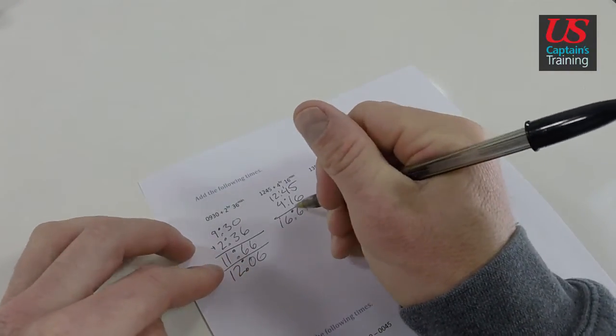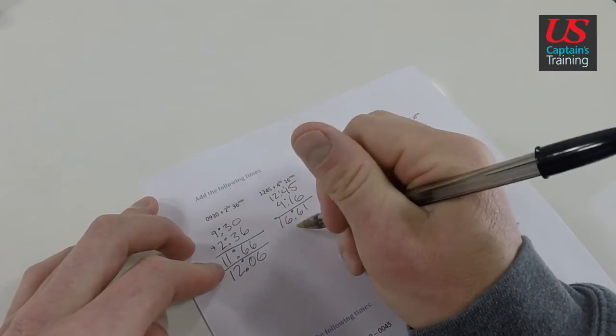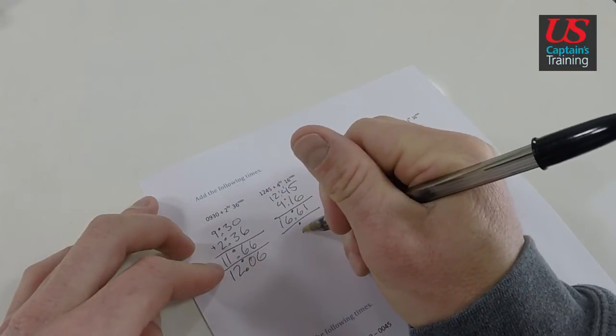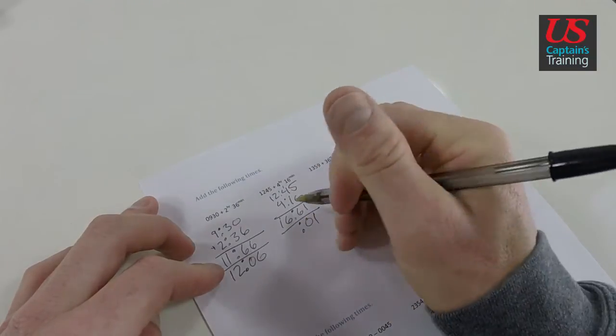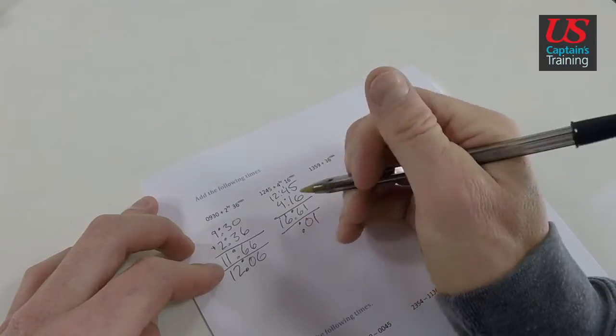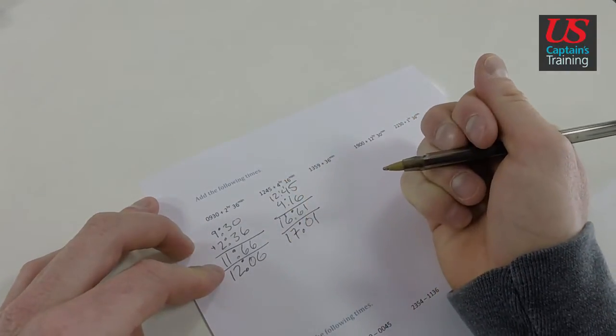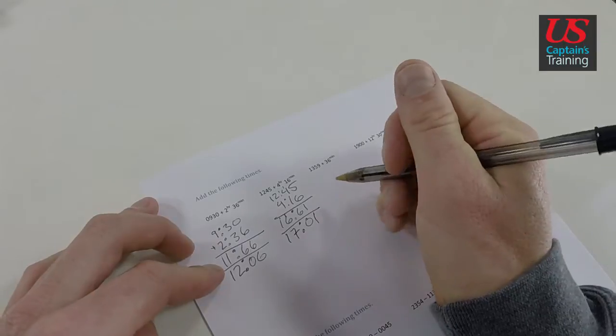Again, look at what we ran into. 61, that's an hour and 1 minute. So we're just going to say we're going to take 60. Now we've got 1 minute left. Put an hour on there. 17:01. We're going to check it at the bottom, and it's correct.